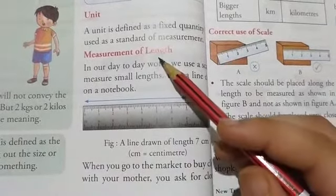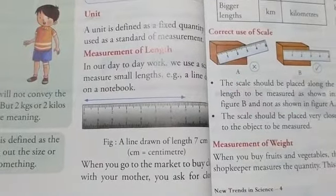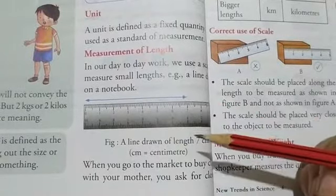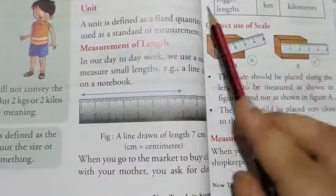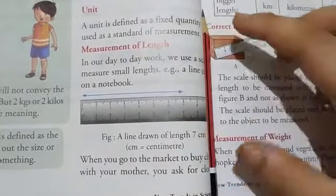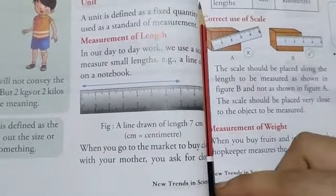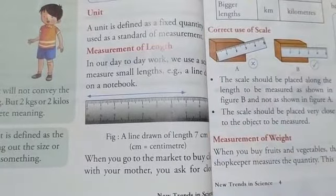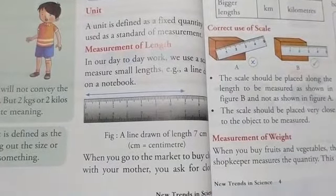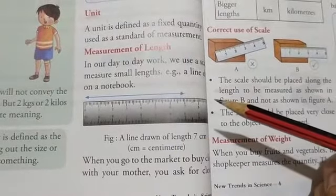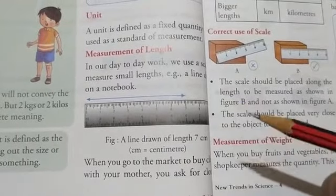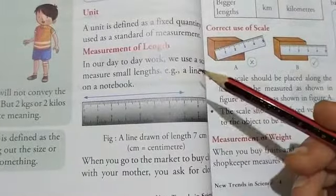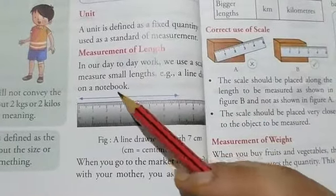Next is measurement of length. How can we define length? Length is the distance between two endpoints or two extreme points of an object. For example, the length of this pencil will be the distance between two endpoints. Now the length of any object is measured by using different scales like centimeter scale, meter scale, measuring tape and inch tape. In our everyday life or day to day work, we use a scale to measure small lengths.